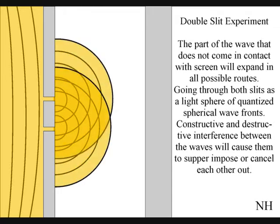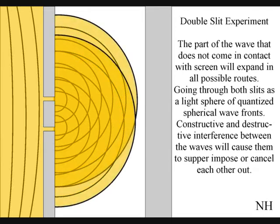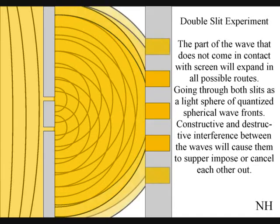Constructive and destructive interference between the waves will cause them to superimpose or cancel each other out. When this wave-particle function comes in contact with the screen, it will collapse, creating moments in time and quantum particles in the shape of an interference pattern.